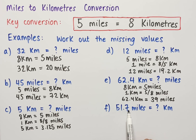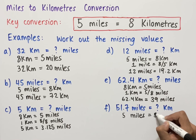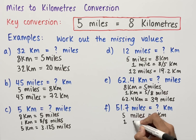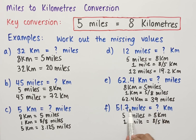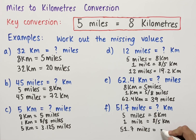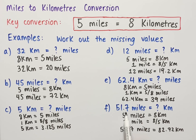The final example is converting 51.7 miles into kilometers. Starting with our conversion — 5 miles equals 8 kilometers — we check whether 51.7 is a multiple of 5. Since it isn't, we use the unitary method. Dividing both sides by 5 gives 1 mile equals 8/5 kilometers. Multiplying both sides by 51.7, we get 51.7 miles equals 8/5 times 51.7, which on a calculator equals 82.72 kilometers.